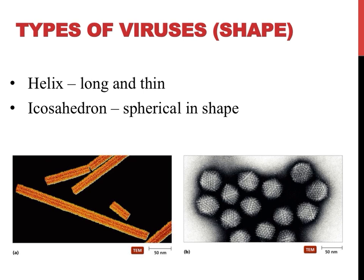Viruses, just like bacteria, can be classified by their shape. While there are countless different shapes, the two most common simple viral shapes are icosahedral and helical. A helix, or helically shaped virus, is shown on the left. DNA is sometimes described as a double helix — a twisted ladder — just as this virus is shaped. The Ebola virus is one example of a helically shaped virus.